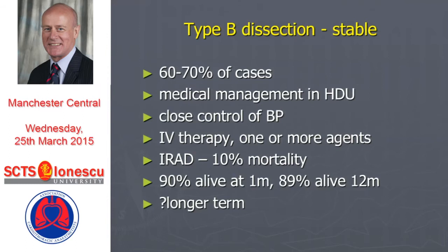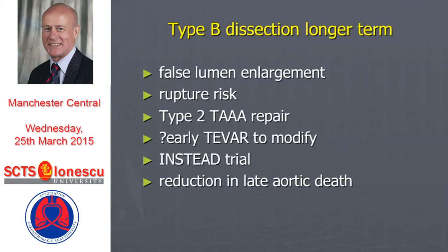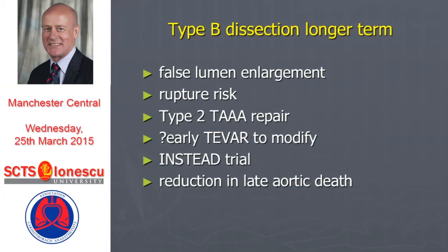The one thing that's perhaps changing is the longer-term management of patients. Professor Nienaber in the audience has been instrumental in altering our understanding of the management of initially stable type B dissections. Because the problem with these cases is that they have a false lumen — you haven't treated it, so there's a persistently perfused false lumen which, in the majority of cases, enlarges to a varying degree and becomes ultimately a rupture risk. There is also an element of late malperfusion syndromes, but that is relatively rare. The real issue is false lumen enlargement and subsequent rupture risk, and when you see these chronic type B dissections with a very large aneurysm, what you're talking about is an extensive type 2 thoracoabdominal repair, which is associated with high morbidity and mortality.